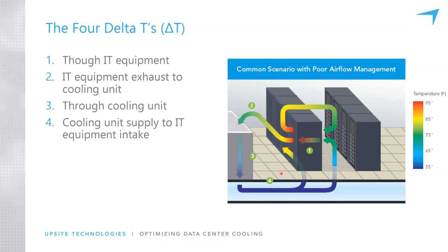However, this is the way facilities actually are. To achieve a maximum intake temperature of 75 or 80 degrees — as most people target — requires, in most environments due to poor airflow management and poor optimization, a supply temperature from cooling units of 55, 60, maybe 65 degrees. That 60-degree air often warms up 20 degrees by the time it reaches the warmest intake temperature, so delta T4 is 20 degrees — a 20-degree increase from the time it leaves the cooling unit to the warmest intake.